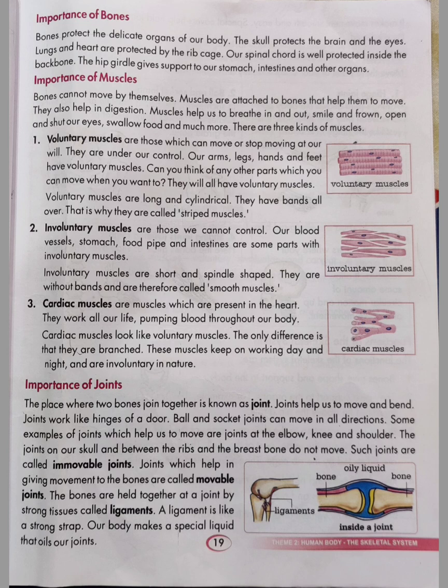Second, involuntary muscles are those we cannot control. Our blood vessels, stomach, food pipe and intestines are some parts with involuntary muscles. Involuntary muscles are short and spindle shaped — they are without bands and are therefore called smooth muscles.